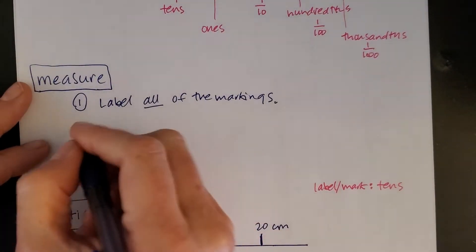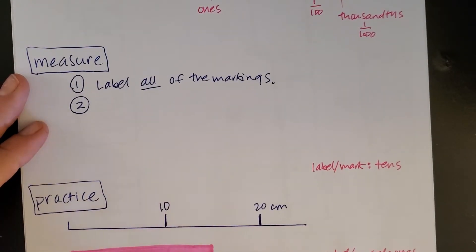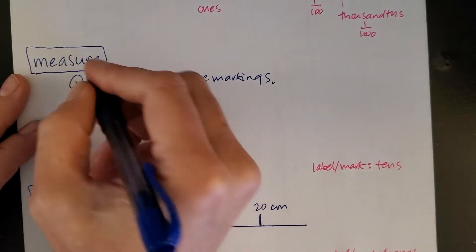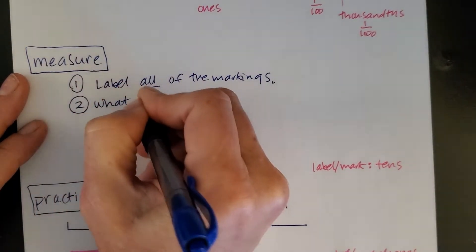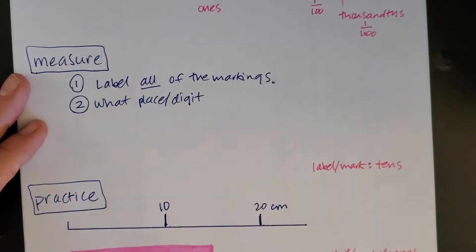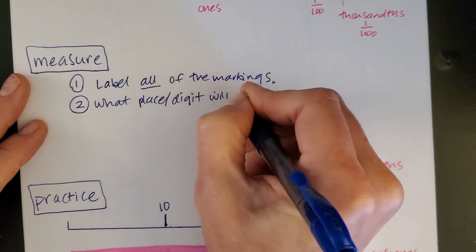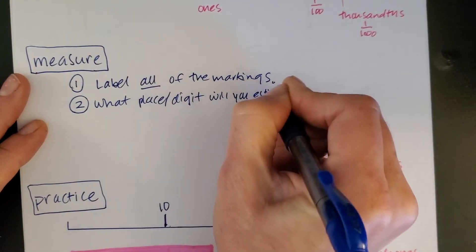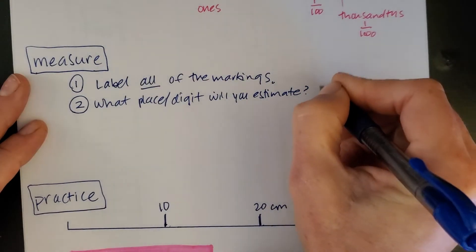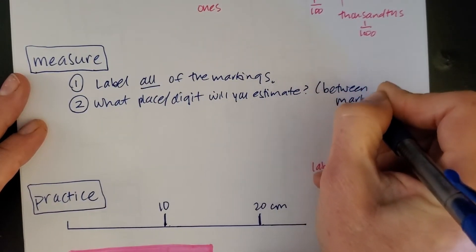Second thing you want to do is figure out what am I going to estimate. And so this is, you're going to look between the markings. So you're going to answer this question, what place or what digit, which is just another word for number, what place or digit will you estimate? And that's going to be between the markings.